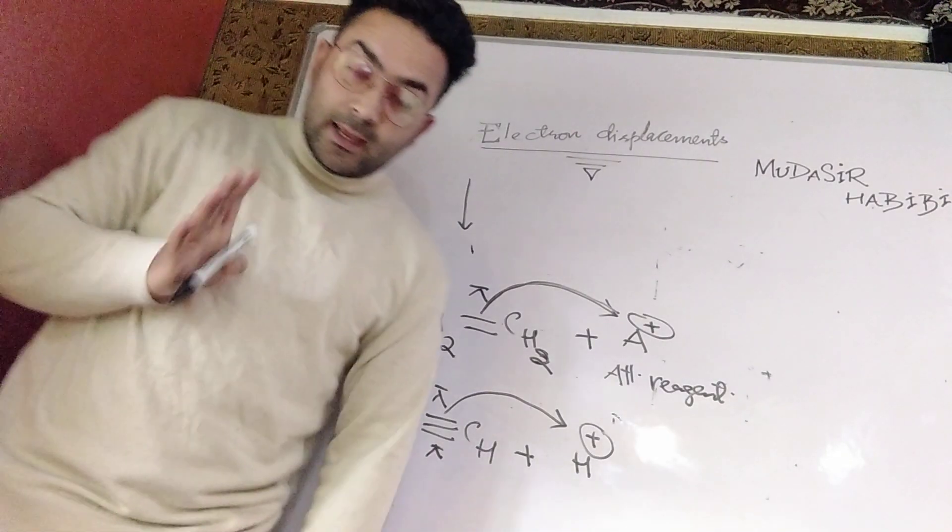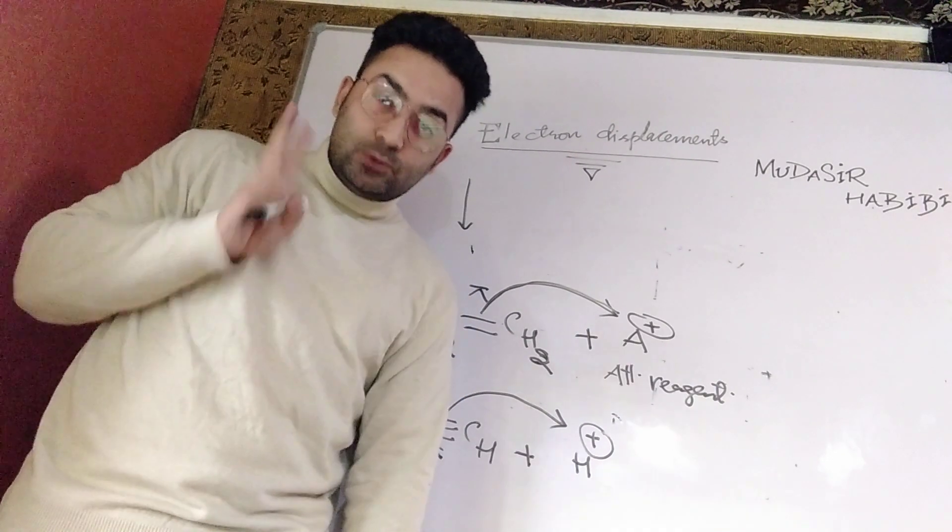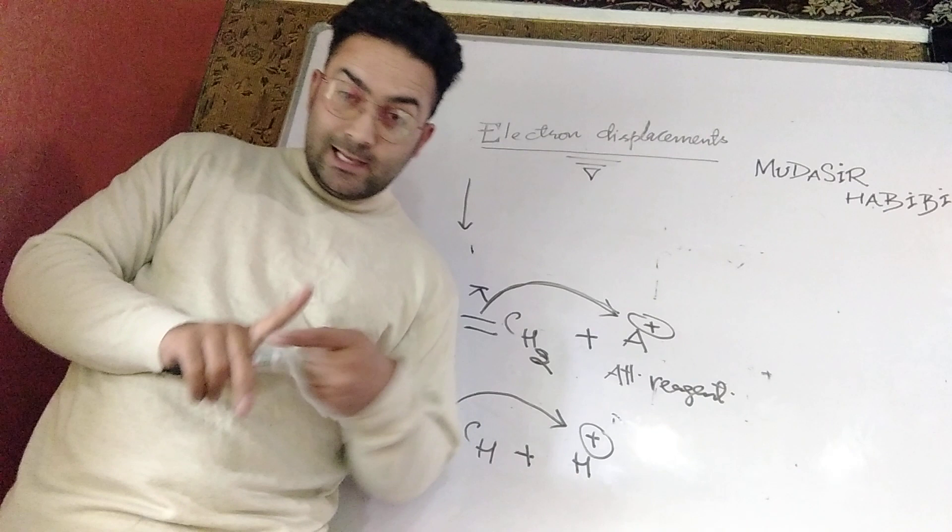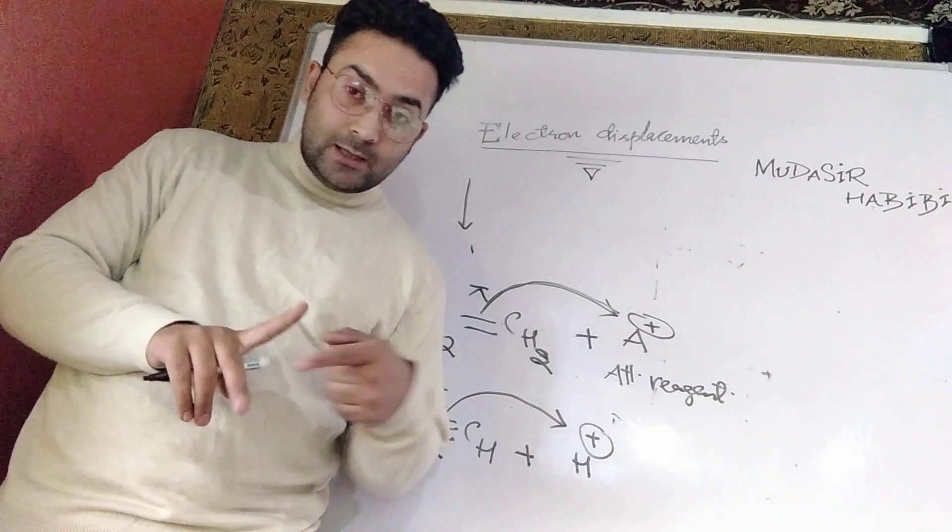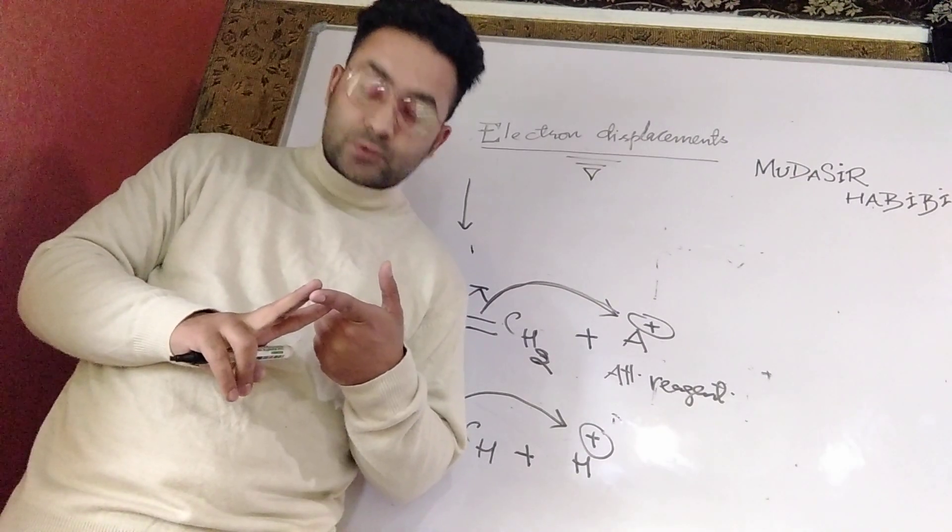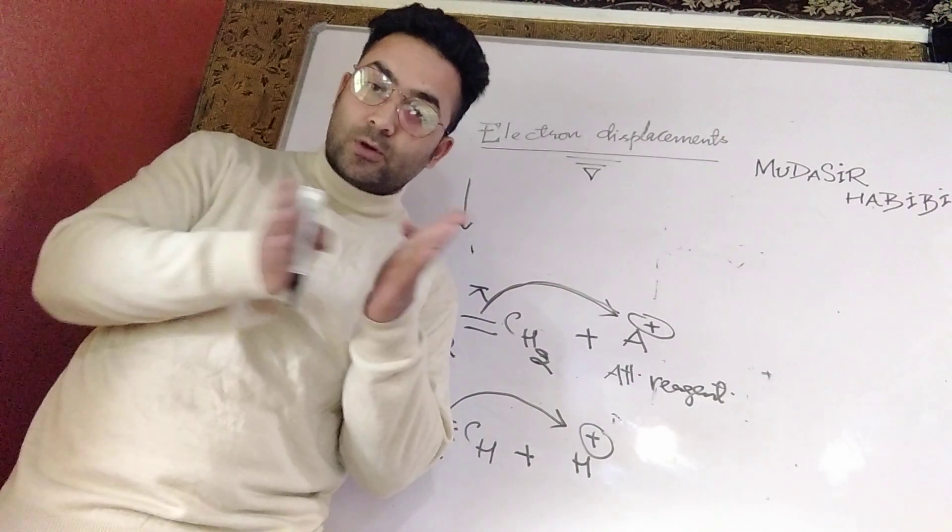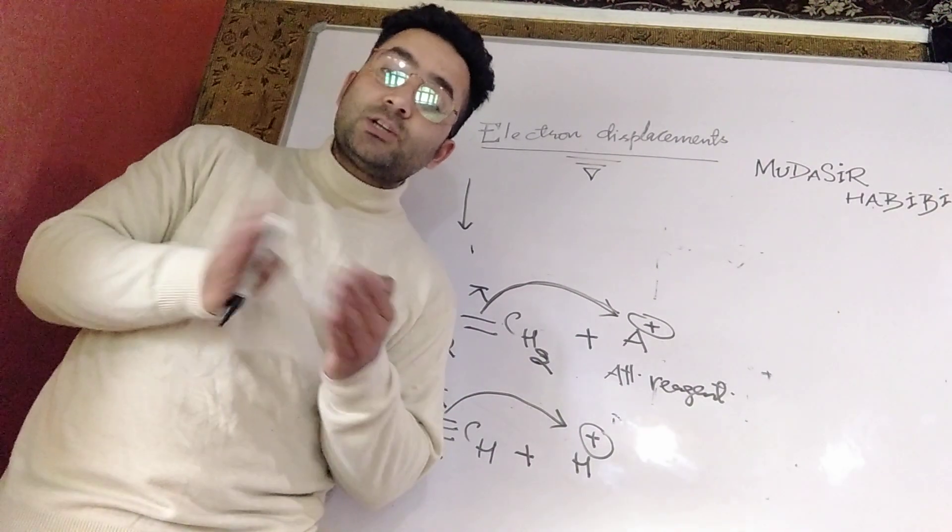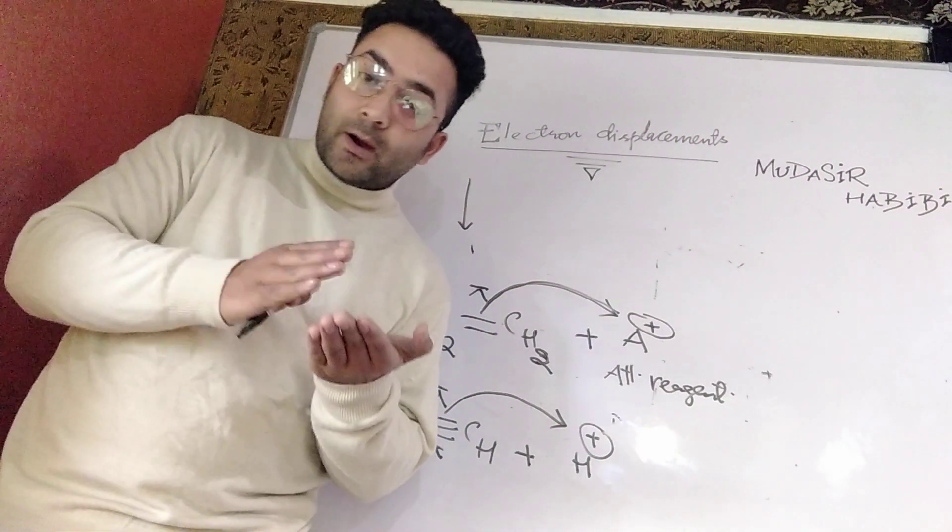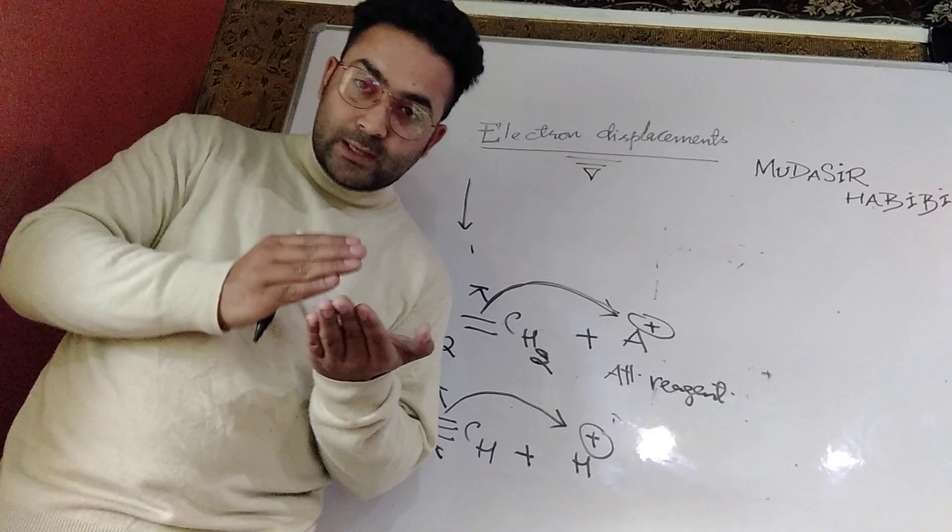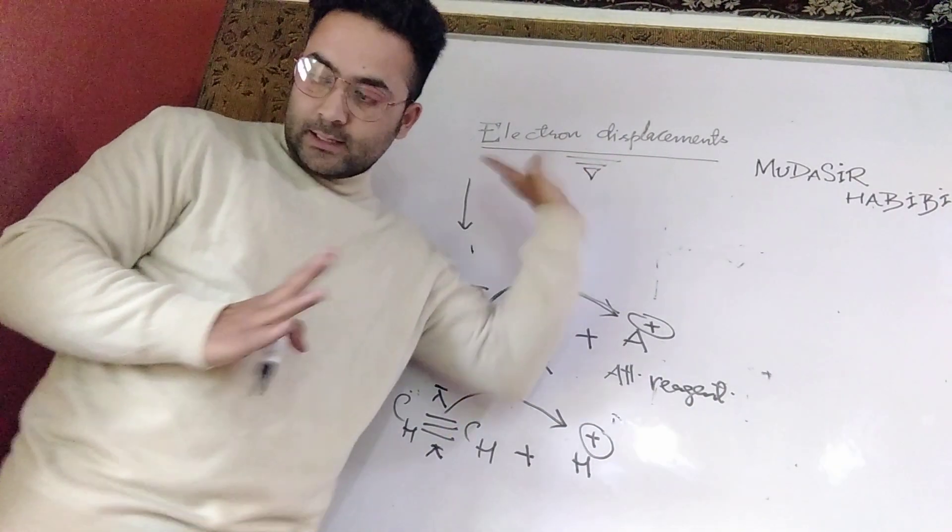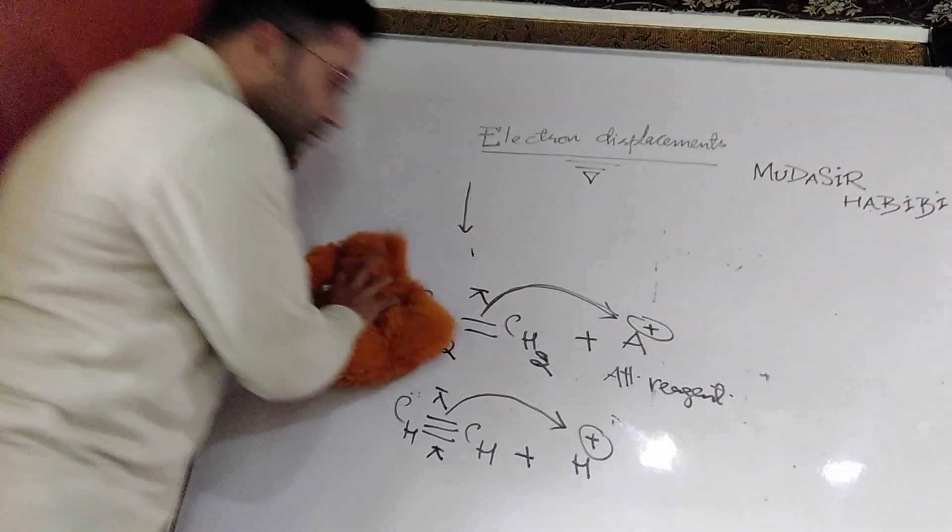This means electron displacement is possible in two cases: either an organic compound has a highly electron-withdrawing atom or a donating atom present, or we need to add an attacking reagent. This means an unsaturated compound should be present and the pi bond will shift. And the only thing is that moment of pi bond or moment of lone pair takes place under the influence of attacking reagents. All these things represent electron displacement.